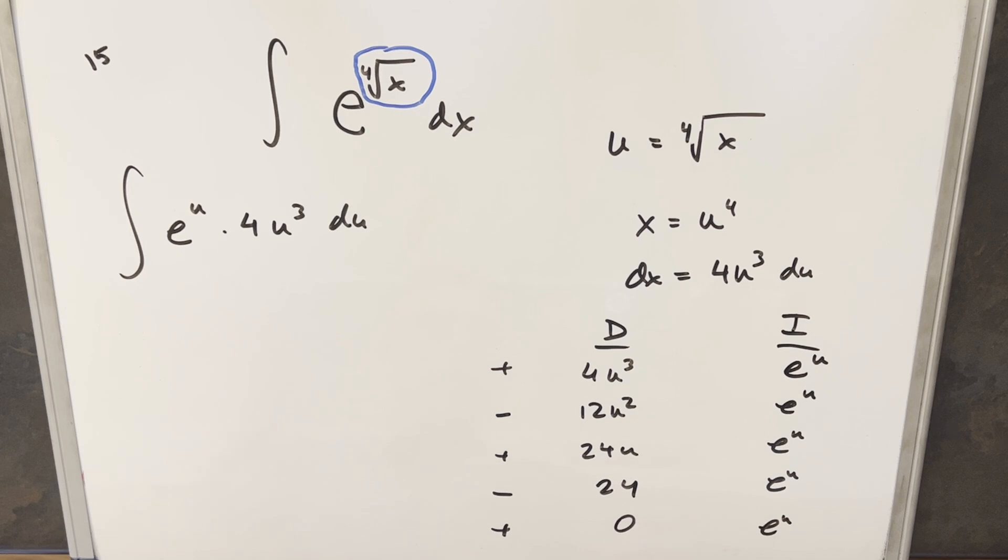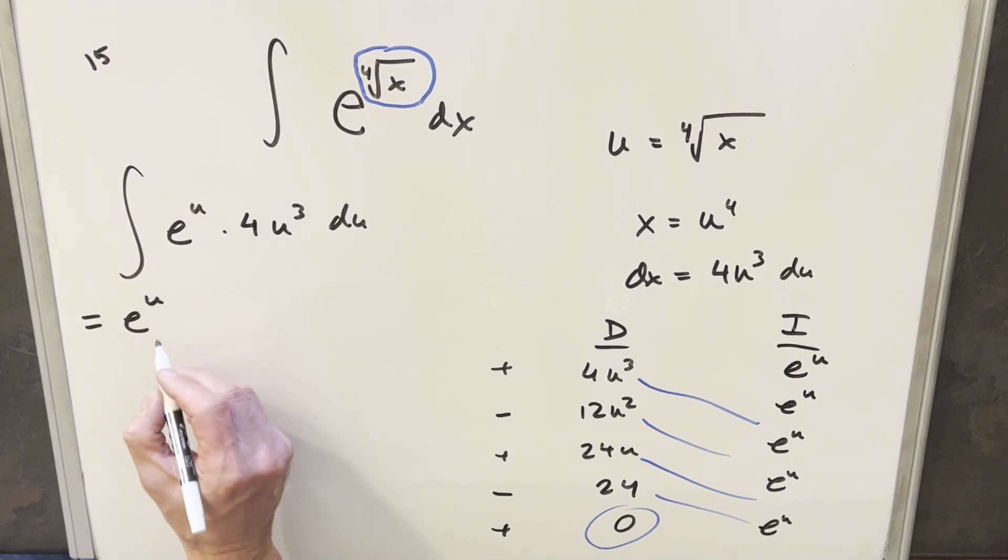So now we don't have to worry about integrating this last row as we have this zero here, which is going to cancel that out. But we just can grab our solution here on the diagonals. So when we copy on this solution, we're going to have an e to the u and everything. So let's just factor that out front. So we'll have an e to the u here.